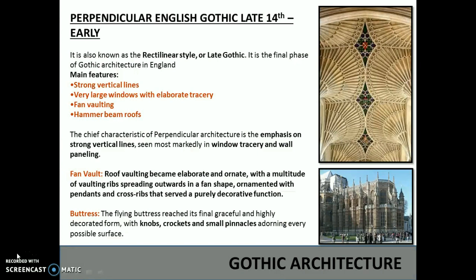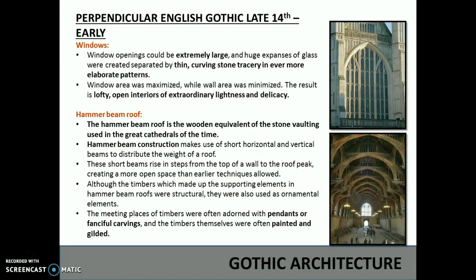The roof vaulting became elaborate and ornate, with a multitude of vaulting ribs spreading outwards in a fan shape, ornamented with pendants and cross ribs that served a purely decorative function. The flying buttress reached its final graceful and highly decorated form, with knobs, crockets and small pinnacles adorning every possible surface. The window openings could be extremely large and huge expanses of glass were created, separated by thin, curving stone tracery in ever more elaborate patterns.